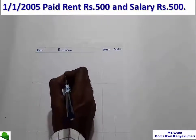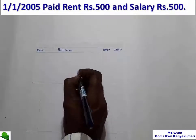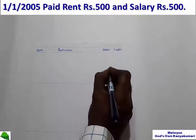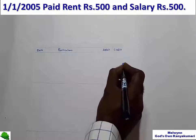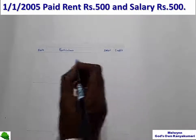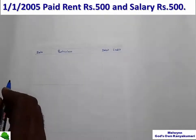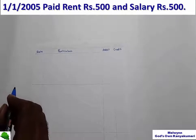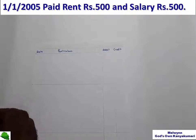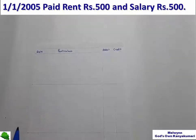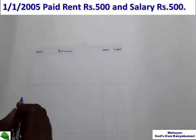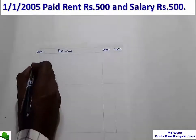This is the format of the journal, and this is how we write the common journal entries — with date, particulars, debit, and credit columns.